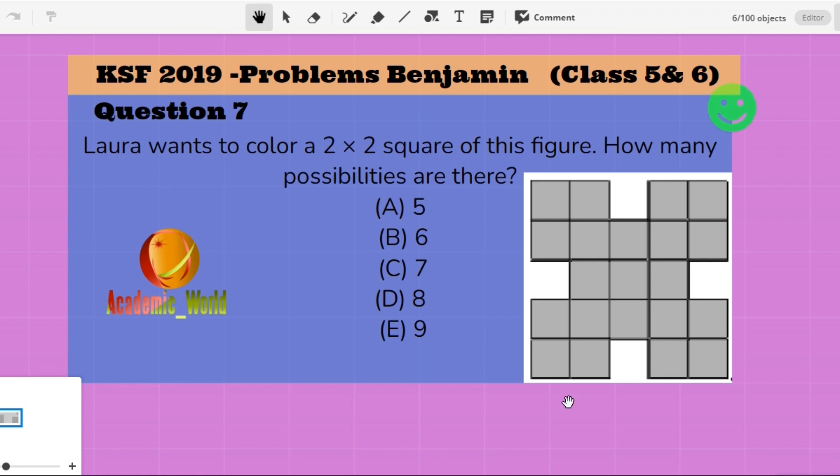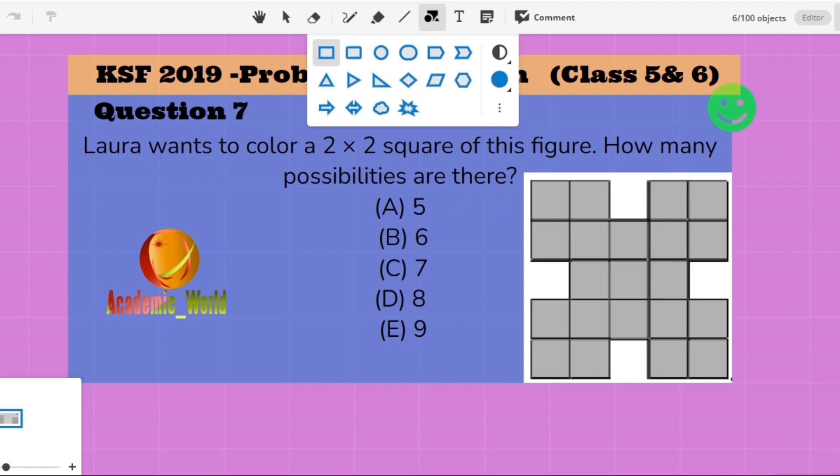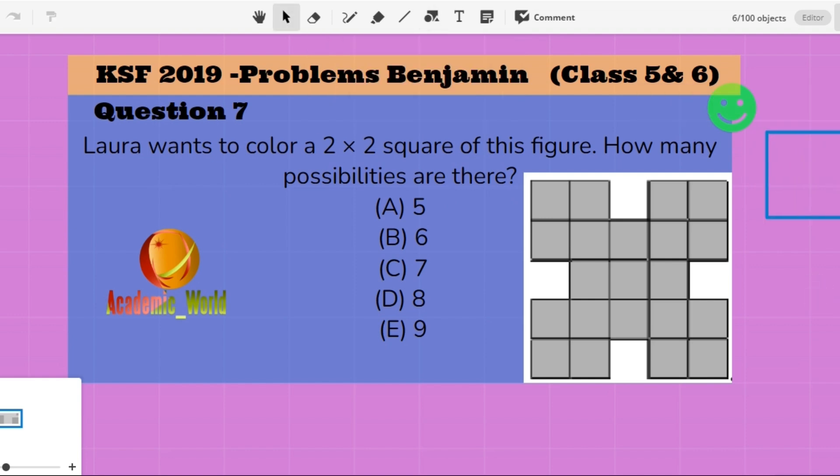Okay, without wasting the time, we are going to solve this question. Laura wants to color a two times two square of this figure. How many possibilities are there? Two times two means, for example, here we have one square and you can split it just like this. So that is two times two. So now you can check how many shapes we can make from this figure.